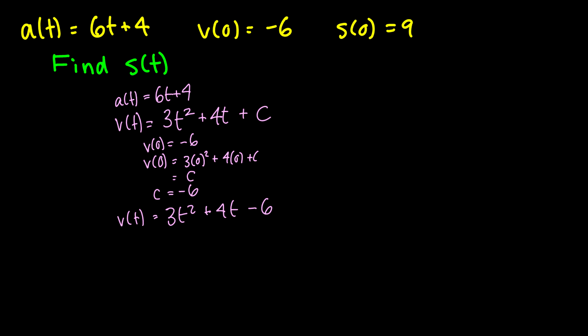Now we can take the position function by taking the antiderivative of the velocity function. This is going to be t^3. If you take its derivative you'll get 3t^2 plus 2t^2. Again if you take this derivative you'll get 4t minus 6t plus a sum constant d. Don't use c.